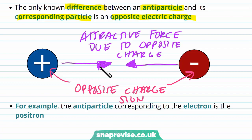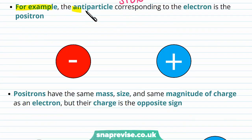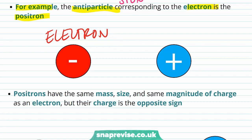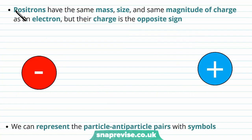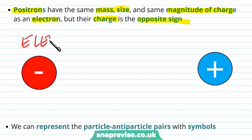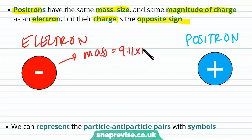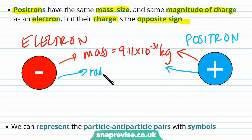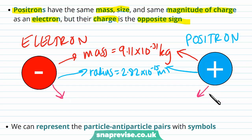Because they have an opposite charge, the particle and anti-particle experience an electrostatic force of attraction, since opposite charges attract each other. For example, the antiparticle corresponding to the electron is the positron. Positrons have the same mass, size, and magnitude of charge as an electron, but their charge is the opposite sign. An electron has mass 9.11 × 10⁻³¹ kilograms, which is also the mass of the positron. Their radius is equal to 2.82 × 10⁻¹⁵ meters.